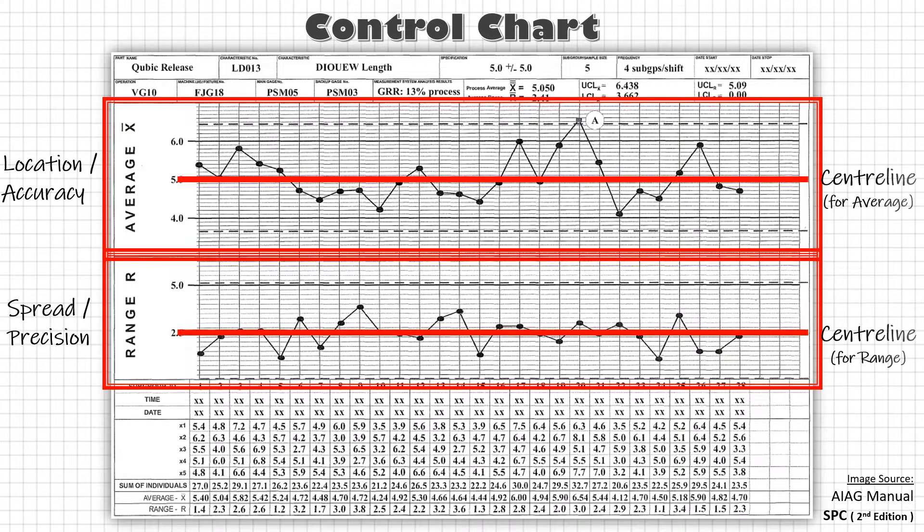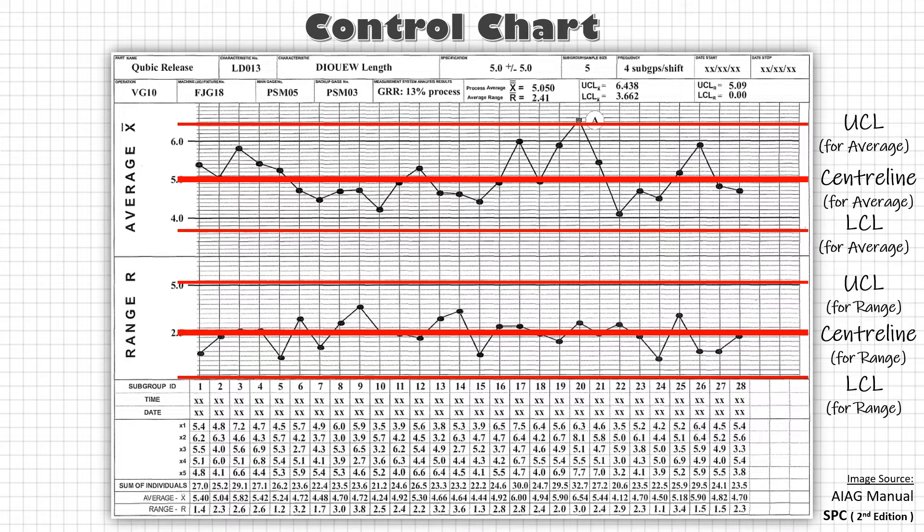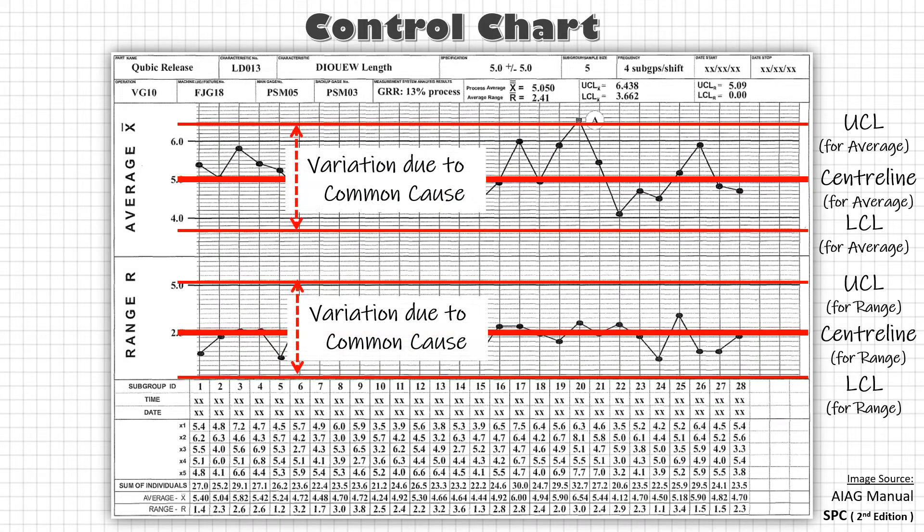Both of these charts has a center line around which we plot the sample data and upper and lower control limits that tells us how far we can expect the sample value from the center line considering the variation due to common causes only.